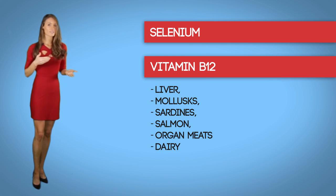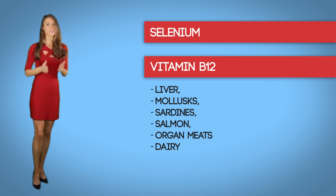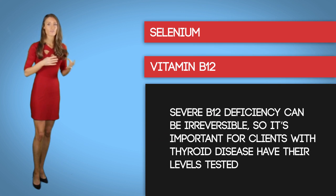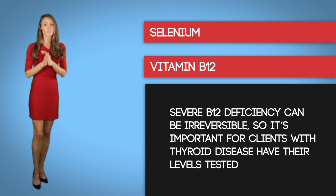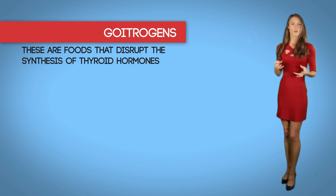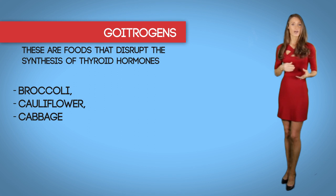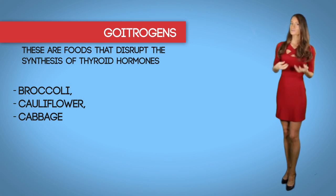Food sources of vitamin B12 include liver, mollusk, sardines, salmon, organ meats, muscle meats, and dairy. Vegan sources include fortified cereals and nutritional yeast. Severe vitamin B12 deficiencies can be irreversible, so it's important for clients with thyroid disease to have their levels tested.